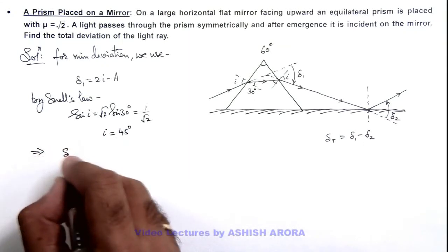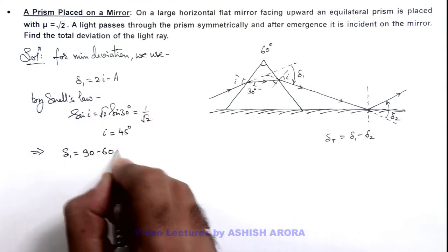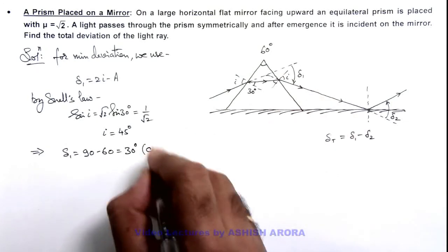This implies the value of delta 1 is 2i that is 90 minus 60, this is 30 degrees. And you can see the value of delta 1 is clockwise.